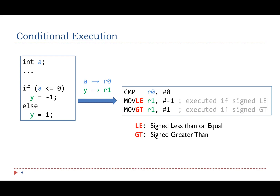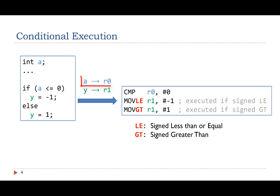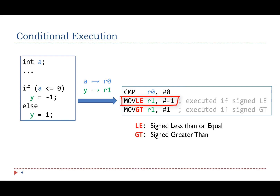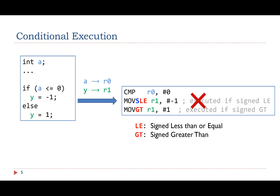Without using any branch instructions, the assembly program can implement the C program in this way. Assume the value of A is stored in register R0 and the value of Y in register R1. In the assembly program, we compare R0 with 0. The MOVLE instruction is executed only if R0 is less than or equal to 0. The MOVGT is executed only if R0 is greater than 0. The last instruction MOVGT has to be executed based on the results of the first CMP instruction. Therefore, the second instruction MOVLE should not modify the NGCV flags.